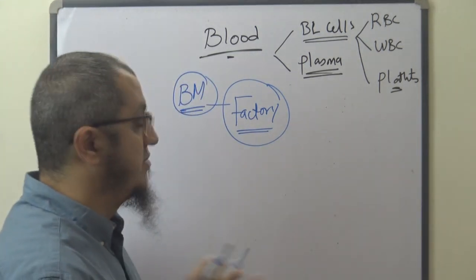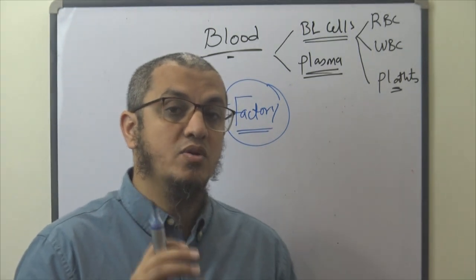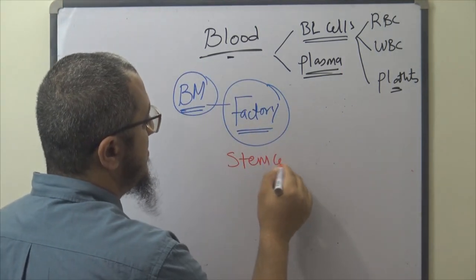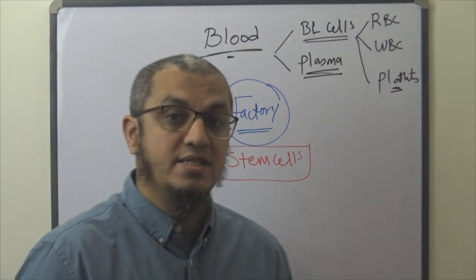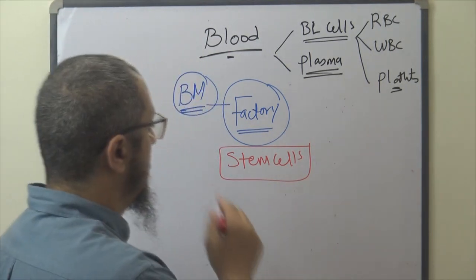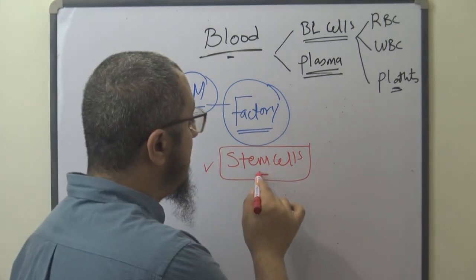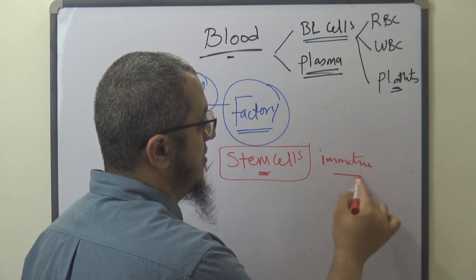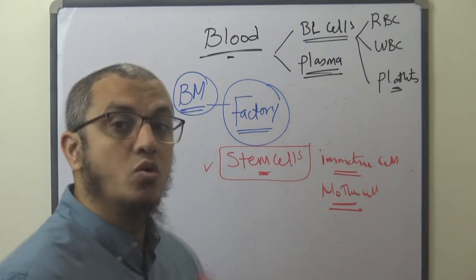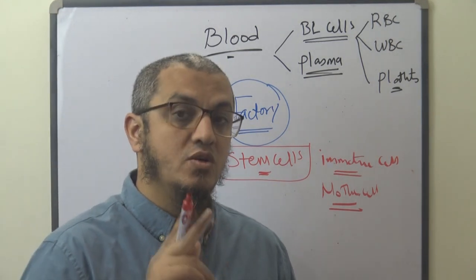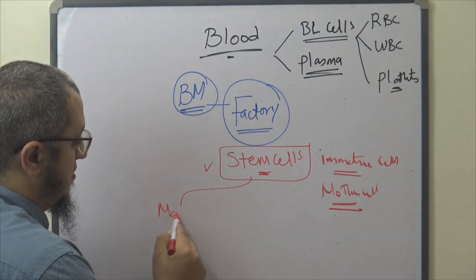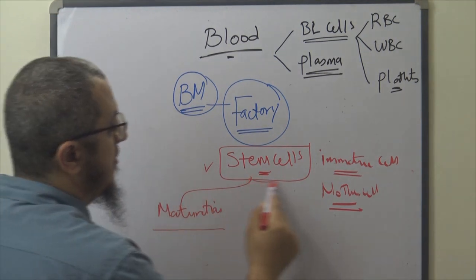This bone marrow contains a very important cell called stem cells. What are stem cells? Stem cells are the mother cells for all blood cells — very important to know. These stem cells are immature cells and, as we said, are the mother cells for all blood cells.